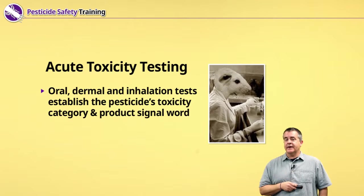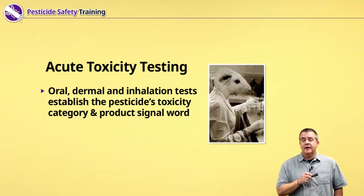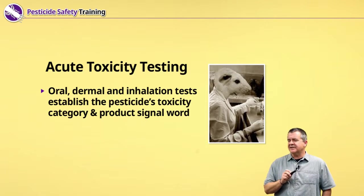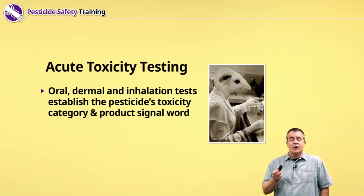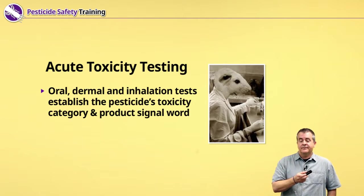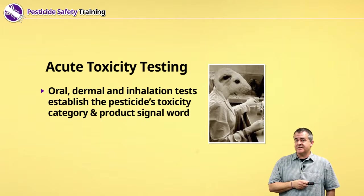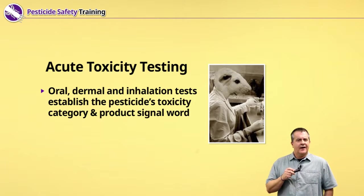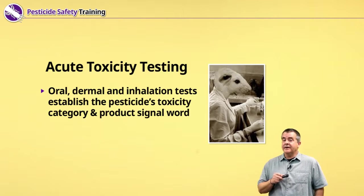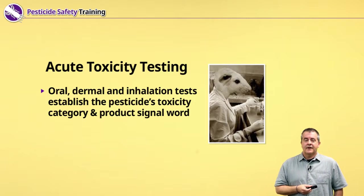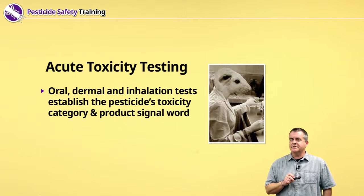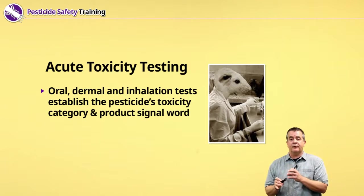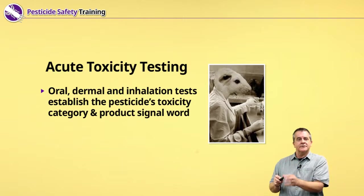When a pesticide is registered in the United States, before it can be approved, the manufacturer has to provide a lot of scientific information to the federal and state governments. This includes oral toxicity — how toxic is the compound if you ingest it? Dermal toxicity — how toxic is it if it gets on your skin? And inhalation toxicity — how toxic is it if you breathe it? These oral, dermal, and inhalation toxicity values are used to put pesticides in categories one through four and establish something called a signal word.